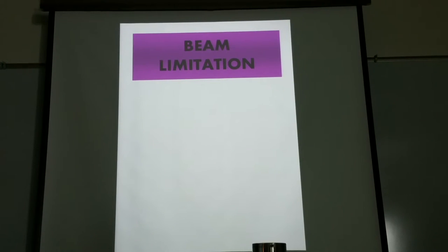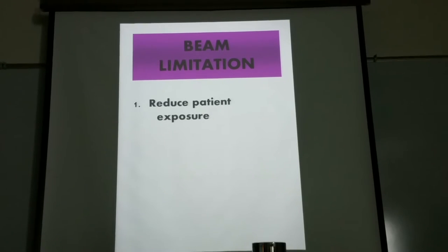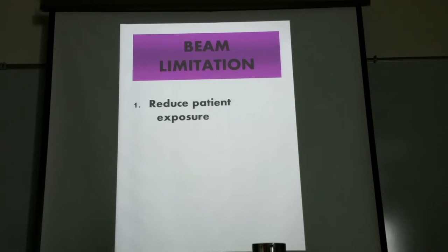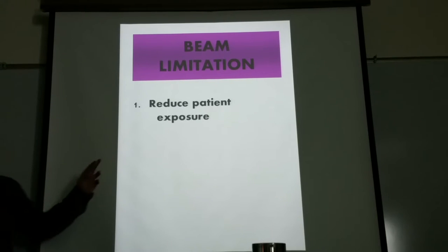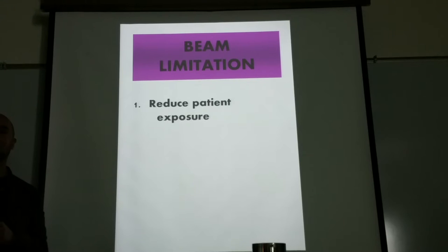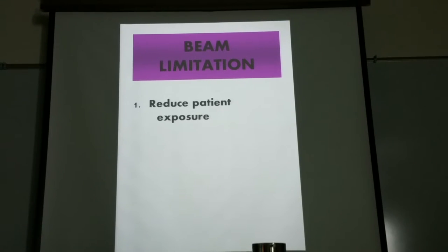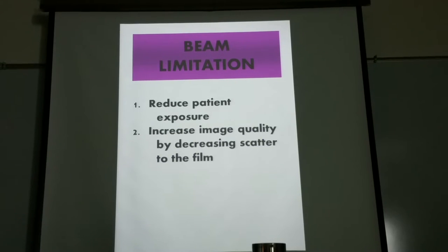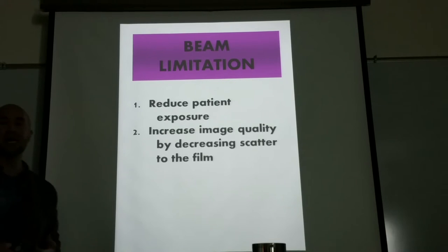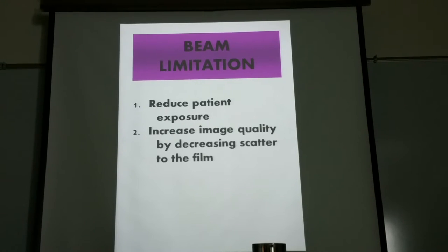We're going to introduce ways to control the size of the x-ray beam, going from the very basic to the very complex. The number one reason for beam limiting is always patient first — to limit the amount of exposure to our patients. Number two is to increase image quality by decreasing scatter to the film. Scatter increases density, decreases contrast, and takes away detail. Removing scatter radiation improves image quality by increasing contrast and overall detail.